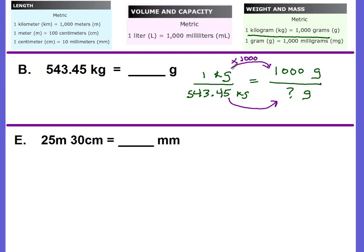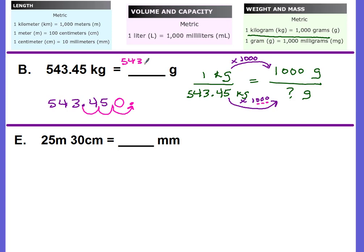We use the same scale factor on the bottom. Take 543.45 and multiply it by 1,000 — count three zeros, move the decimal three places to the right. Here's one, here's two, here's three. The new decimal goes there, fill one hole with a zero. The answer is 543,450 grams. Please make sure you rewrite your answer neatly and use commas where necessary.